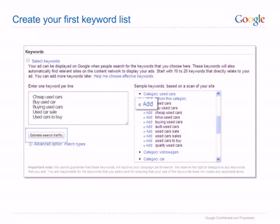Once you've chosen your keywords, click on the 'estimate search traffic' button to see an estimate of the number of clicks per day you may receive, based on your chosen keywords, daily budget, and maximum cost per click. You will only get a true picture of how your campaign is performing once it has been running for a few days, so check in regularly to monitor your performance.